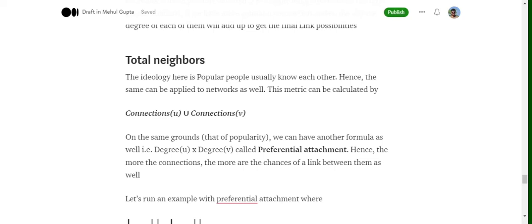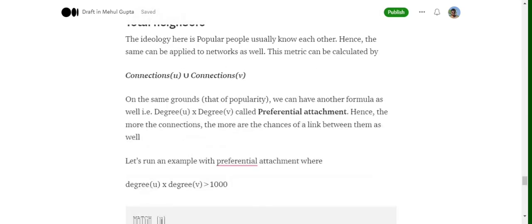And similarly a metric on a similar ground, that is preferential attachment. So in case of doing a union, what you're doing is degree of U multiplied by degree of V. So we can set up thresholds like when this value is greater than some threshold, then only we would be considering an edge. If not, we won't be considering an edge in the future.